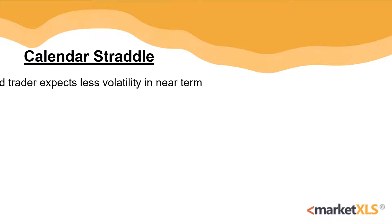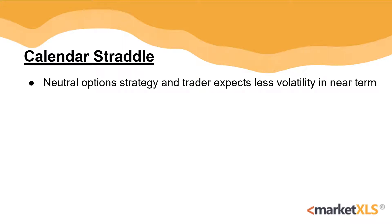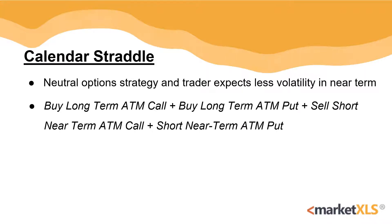The calendar straddle is a neutral options strategy designed to profit when a stock is expected to move within a tight channel in the short term, while still keeping the potential for profiting should the stock stage a breakout. The calendar straddle produces this effect by buying a long-term straddle while writing a short-term straddle. This is done by buying a long-term ATM call along with a long-term ATM put, and selling a near-term ATM call with a near-term ATM put.